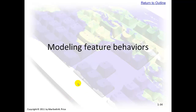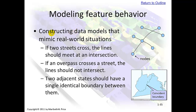Modeling feature behavior. This means constructing data models that mimic real-world situations. For example, if two streets cross, the line should meet at an intersection at this point. If an overpass crosses a street, the line should not intersect — shown right here, they're not intersecting. Two adjacent states should have a single identical boundary between them — a coincident boundary — where there is not two different boundaries; they share a boundary.